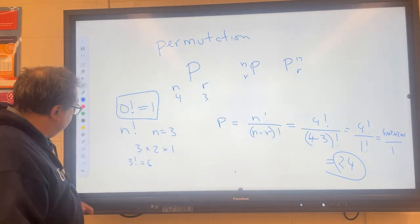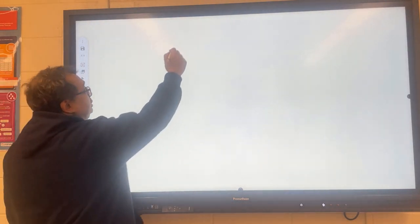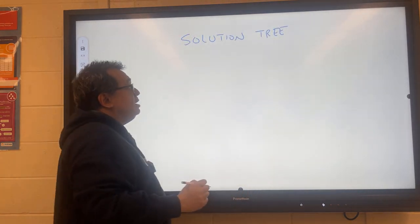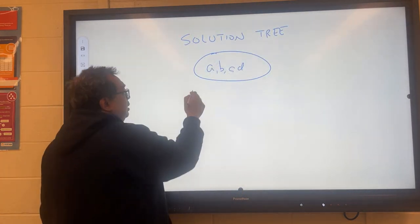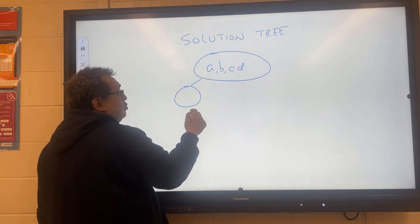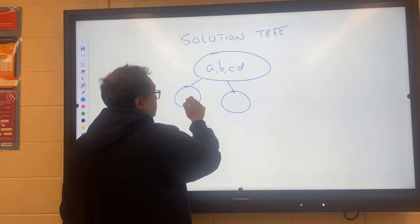So what we're going to do now is we're going to draw something called a solution tree, and to do this, I'm going to start with all four horses up here, and then what I'm going to do is I'm going to start drawing the parts of the tree here like this.